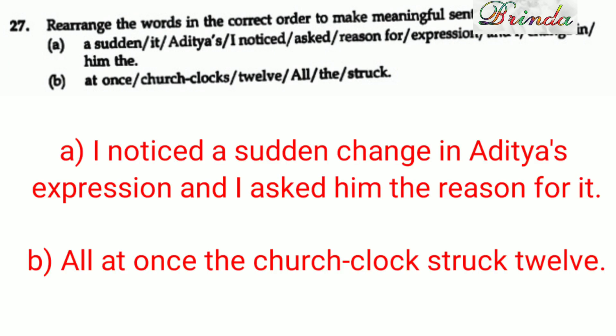Question 26: Transform into a compound sentence — 'On seeing the teacher, the children stood up.' Answer: 'The children saw the teacher and they stood up.' Alternatively: 'The children saw the teacher and at once they stood up.' Question 27: Rearrange the jumbled words. First set: 'I noticed a sudden change in Aditya's expression and I asked him the reason for it.' Second set: 'All at once the church clock struck twelve.' Writing both sentences correctly gives you two marks.